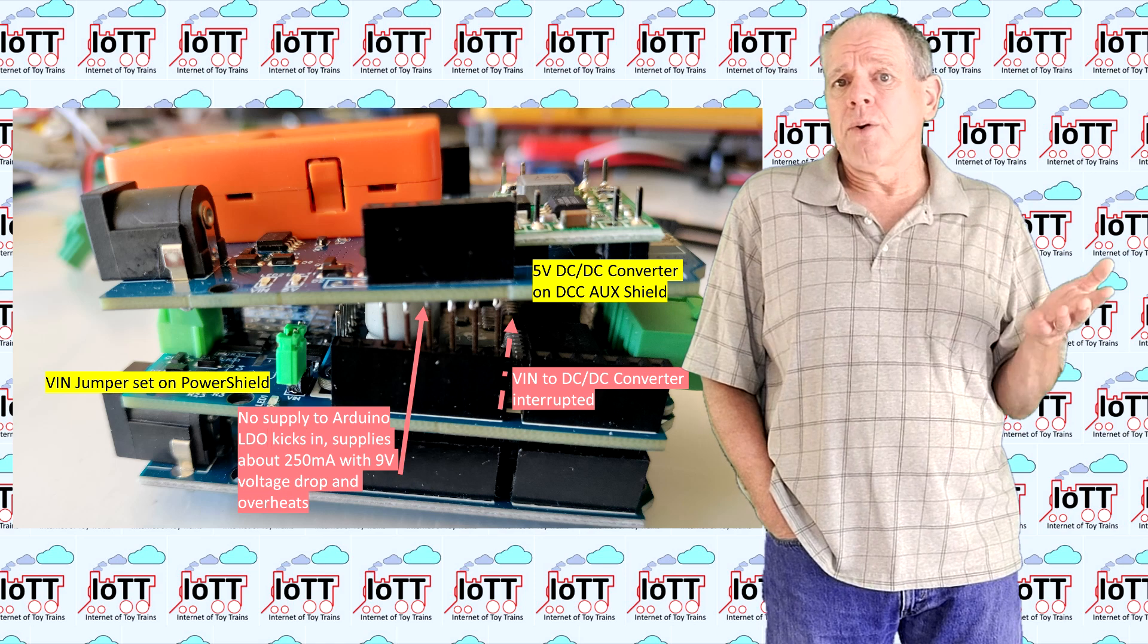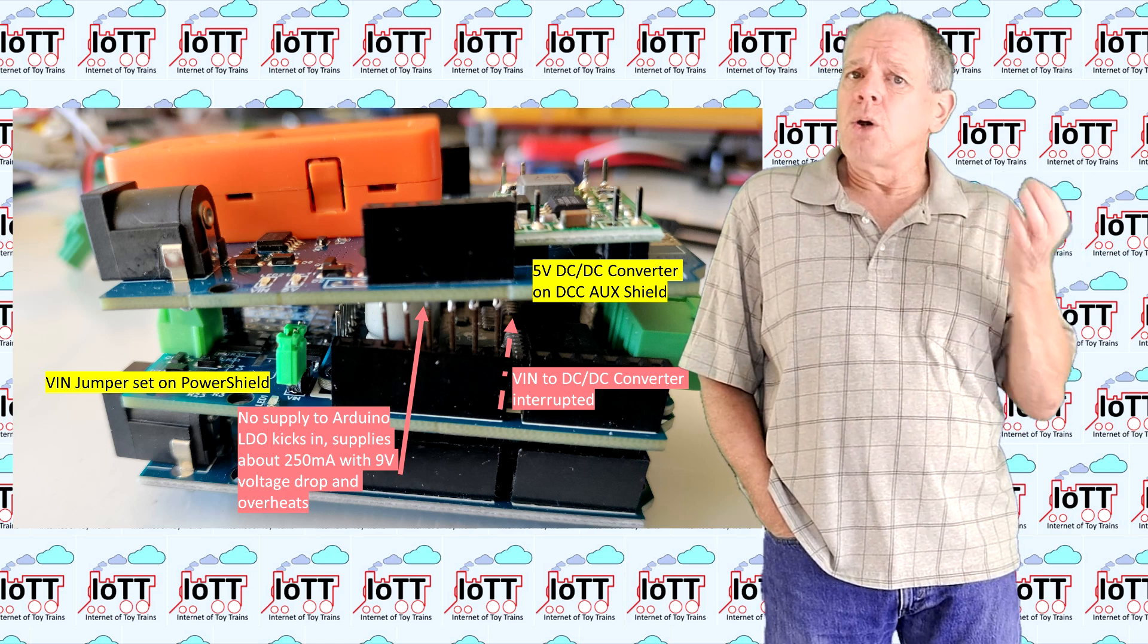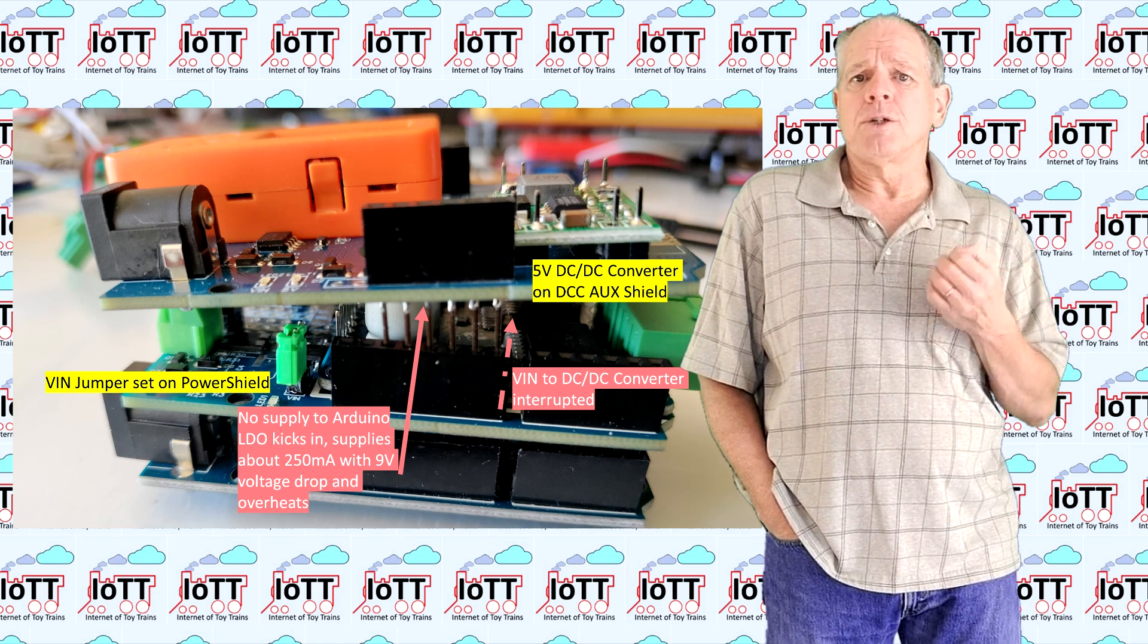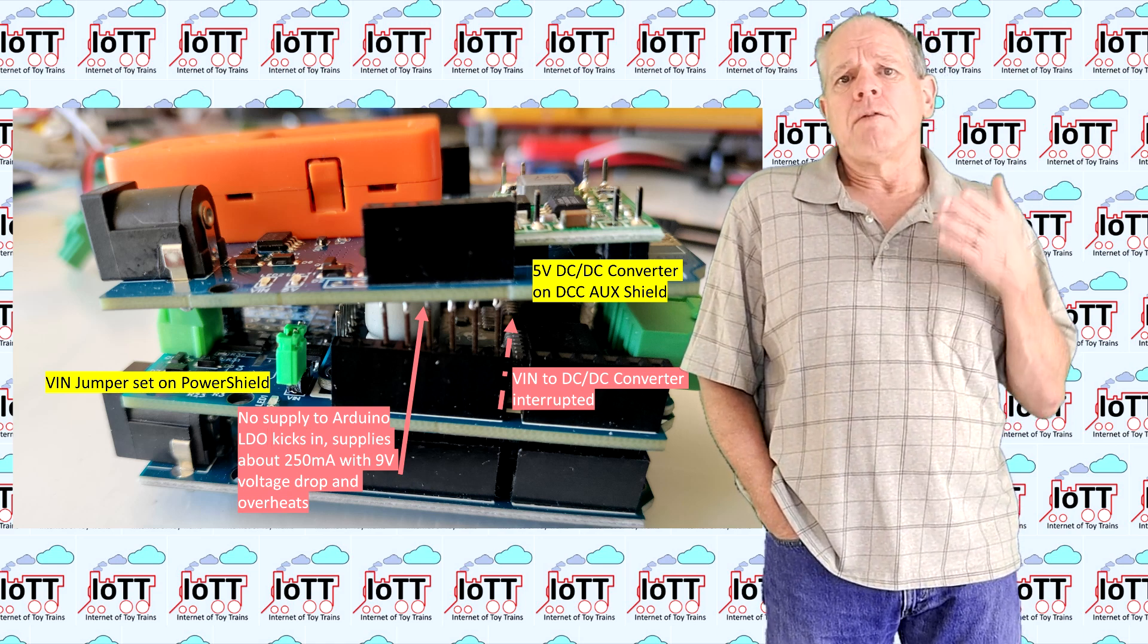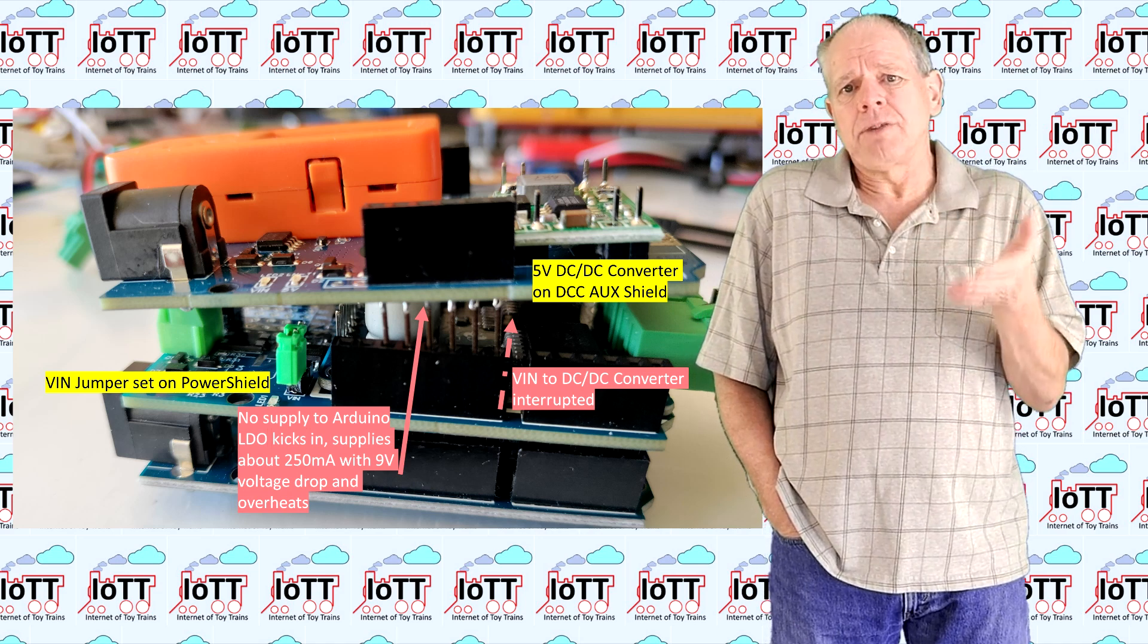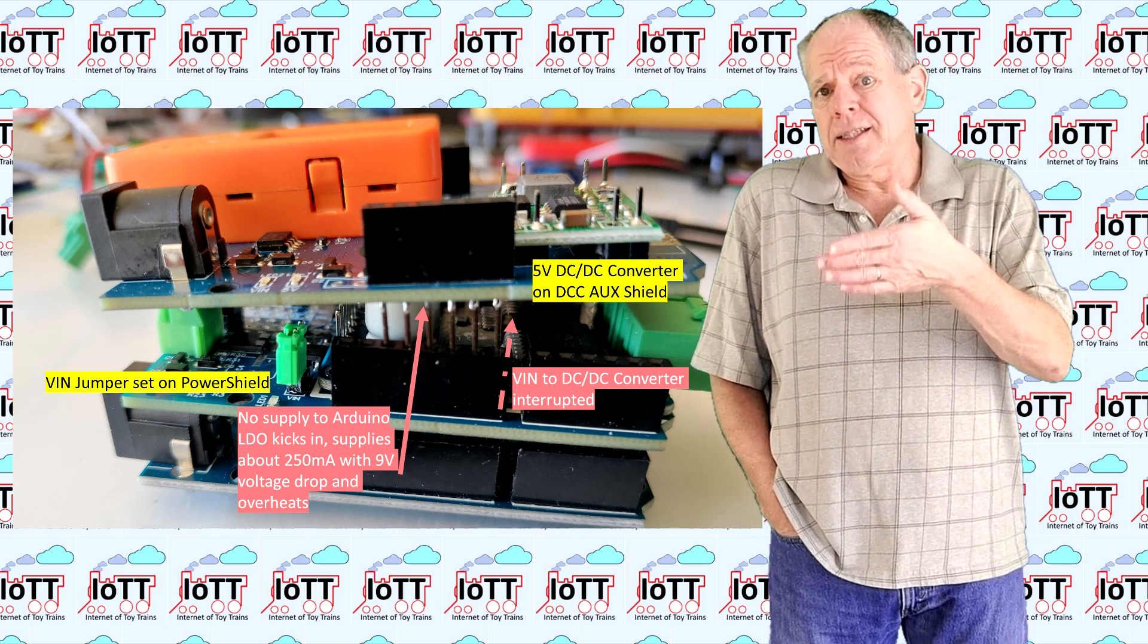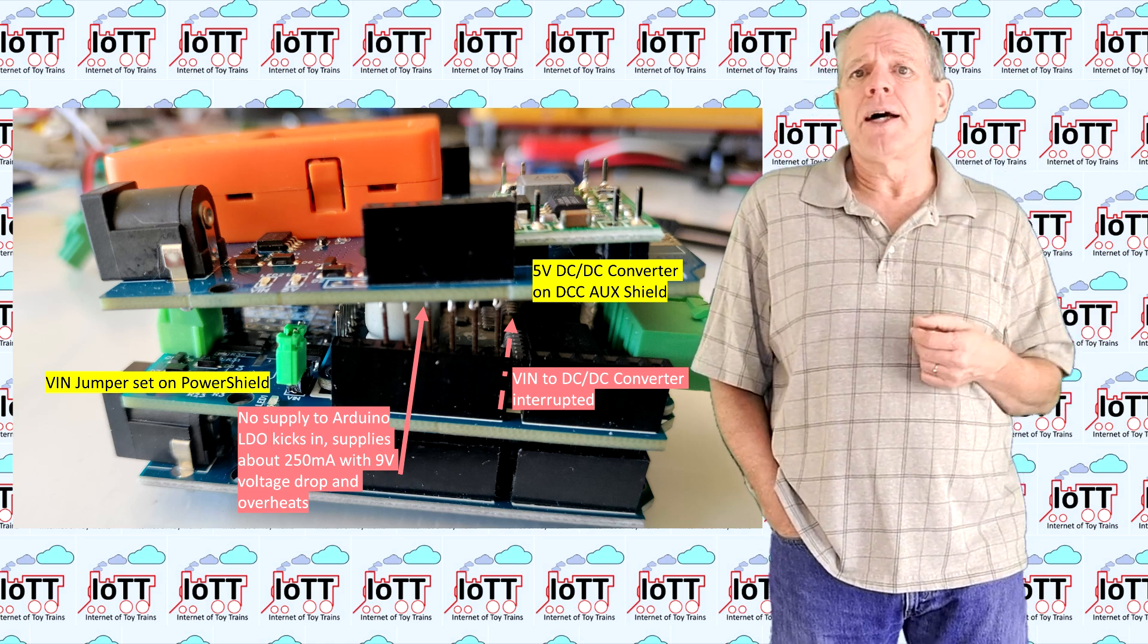Again here, the learning point is that proper wiring makes the difference. But it also demonstrates the effectiveness of using a bug converter, which allows powering the entire Arduino DCC stack with one single power supply for the track power and the Arduino board to simplify the wiring.